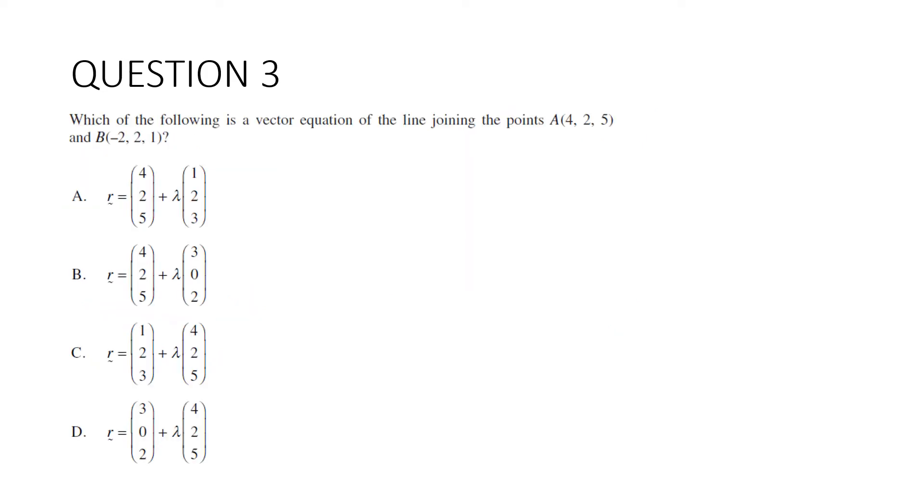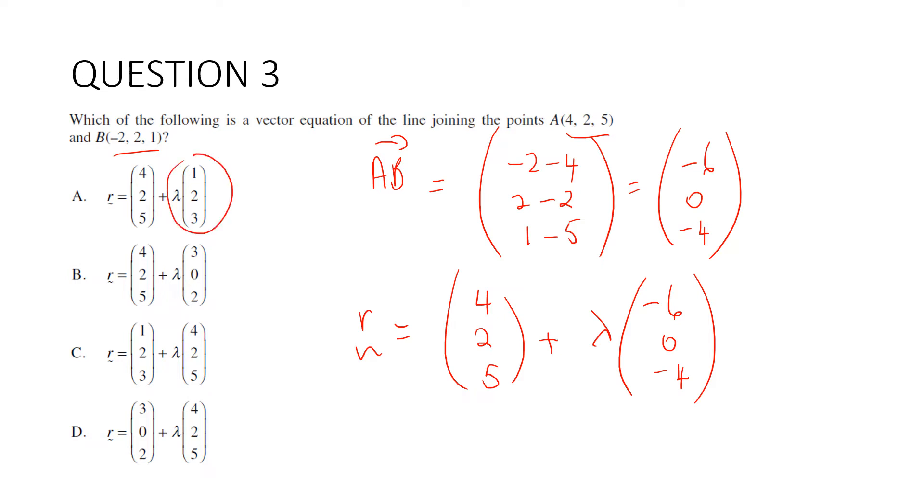Question 3. Which of the following is the vector equation of the line joining the points A and B? So we need a direction vector. We'll do AB. So that is negative 2 take 4, 2 take 2, 1 take 5 is equal to negative 6, 0, negative 4. And R is going to be equal to either one of these points, it doesn't really matter, 4, 2, 5 plus some multiple of this direction vector. Let's see if we can rule this out. That is not a multiple of that direction vector. This is. That isn't. And this isn't. So our answer is B.